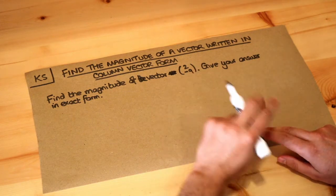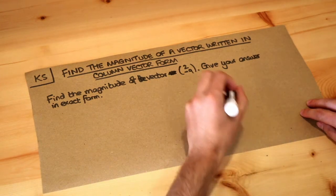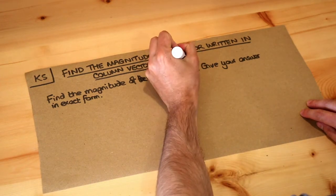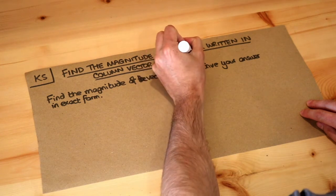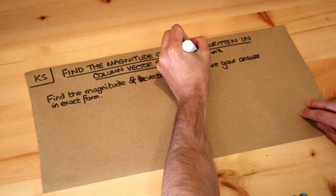Now in the previous video we looked at what a vector was and let's think what this 2 minus 9 actually means. The top number means the movement in X, the change in X, and the bottom number means the change in Y.